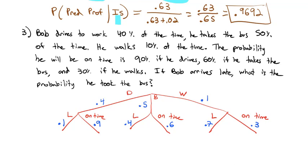Multiplying down the branches: drive and late is 0.04, drive and on time is 0.36, bus and late is 0.20, bus and on time is 0.30, walk and late is 0.07, and walk and on time is 0.03.